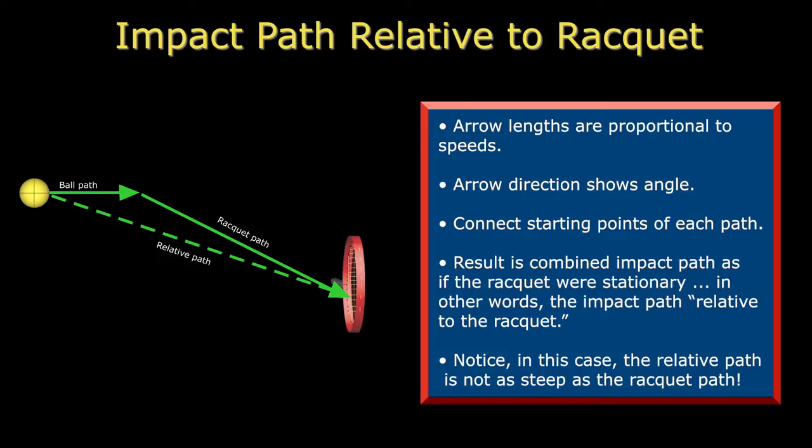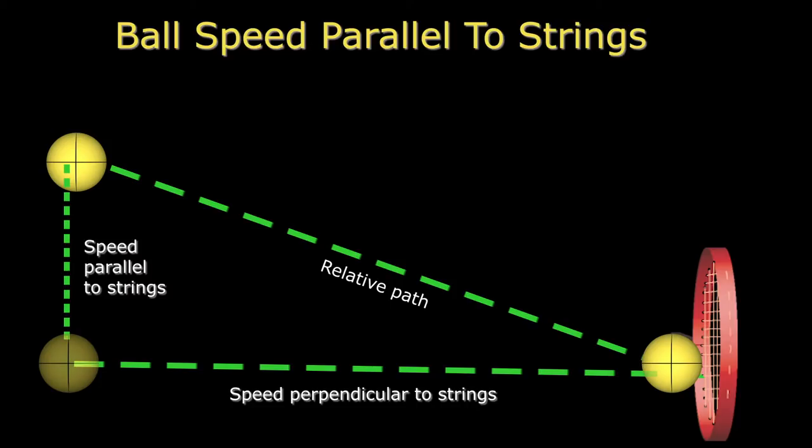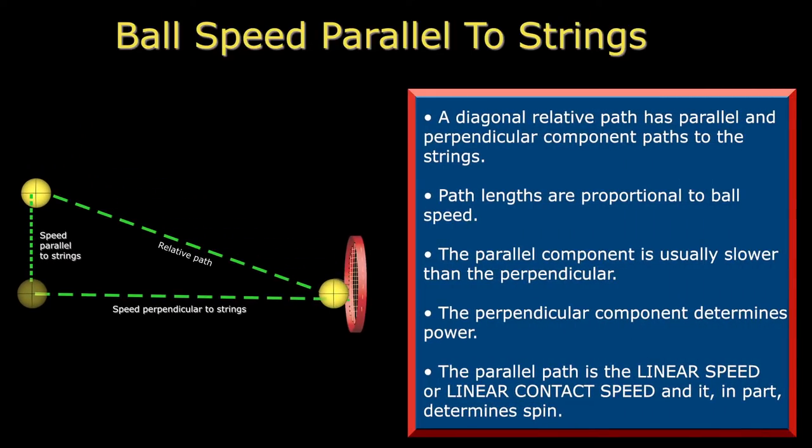If we know the ball and racket speeds and angles, then we can figure out the speed and angle of the relative path. Having done so, we can now hide our original paths and use only the relative path to next determine the contact speed parallel to the strings, which is what we are after in the first place. When a relative path is diagonal to the strings, it is effectively comprising motion in two directions, one perpendicular and the other parallel to the string bed. So to summarize, a diagonal relative path has parallel and perpendicular component paths to the strings. Path lengths are proportional to ball speed. The parallel component is usually slower than the perpendicular one. The perpendicular component determines power and the parallel component is the linear motion contribution to contact velocity. Going forward, we will call this the linear speed.